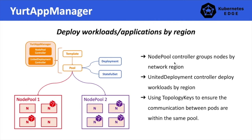We developed the Yurt App Manager to ease the maintenance burden on users. The Yurt App Manager contains two controllers: the NodePool controller and the UnitedDeployment controller. The NodePool controller can group nodes into pools — for example, nodes with the same system architecture or nodes from the same network region — and we can then manage nodes in the same pool uniformly by adding labels, annotations, or taints to all nodes in the pool. The UnitedDeployment controller can then deploy workloads based on the same template but with different configurations across pools. In addition, we leverage the service topology feature to bound east-west network traffic within a pool.